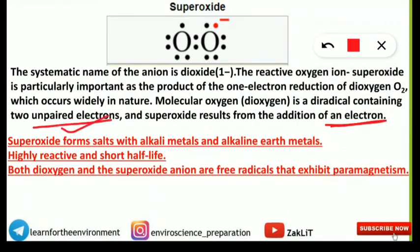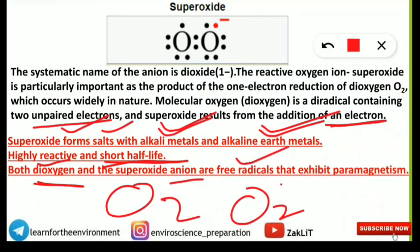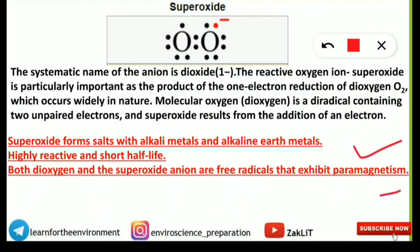Three important points about superoxide: First, it forms salts with both alkali metals and alkaline earth metals. Second, it is highly reactive but short-lived — its half-life is very short. Third, both dioxygen (O₂) and the superoxide anion (O₂⁻) are free radicals that exhibit paramagnetism. This is a key property of both species.